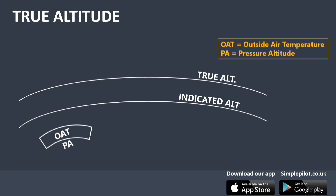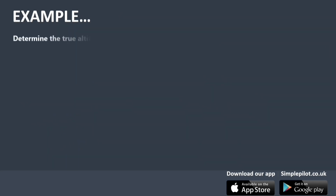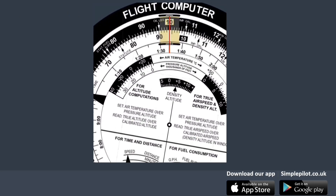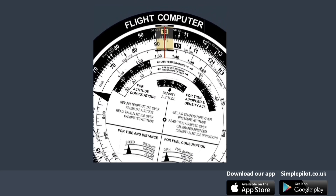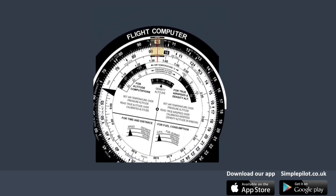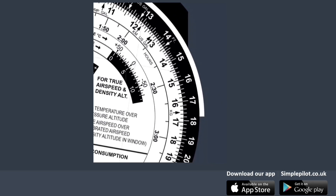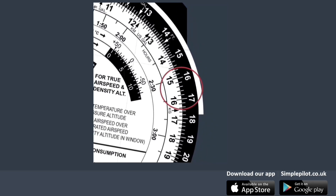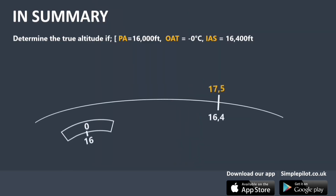Let's see an example. We have to determine the true altitude given a pressure altitude of 16,000 feet, a temperature of 0 degrees, and an indicated altitude of 16,400 feet. We first align the altitude of 16,000 feet with the temperature of 0 degrees on the inner left window. Then we look for 16.4 on the middle scale, representing 16,400 feet of indicated altitude. Finally, we can see the corresponding true altitude on the outer scale: 17,500 feet.